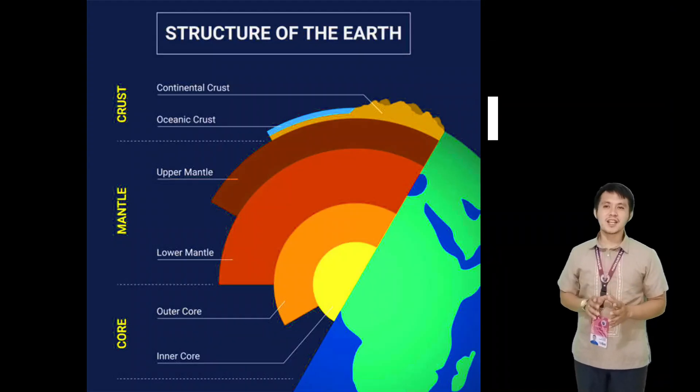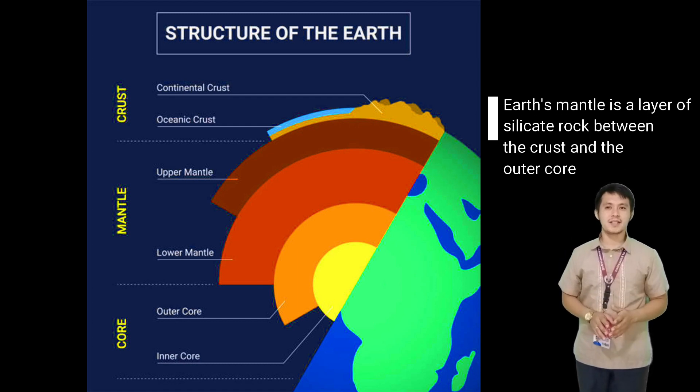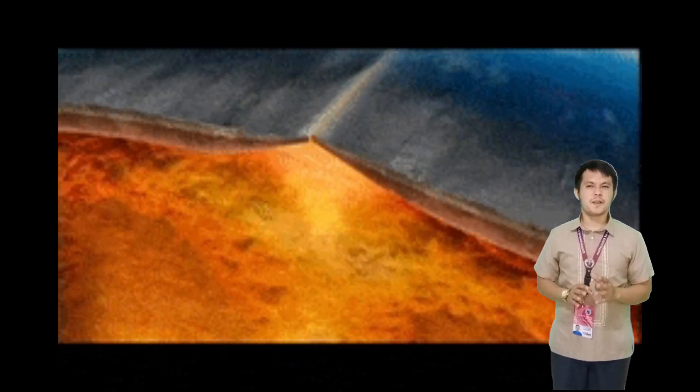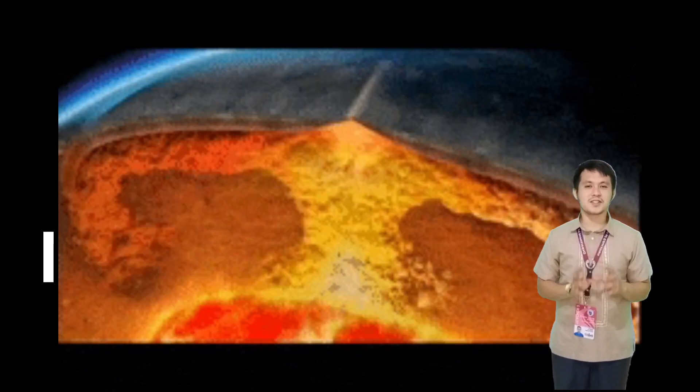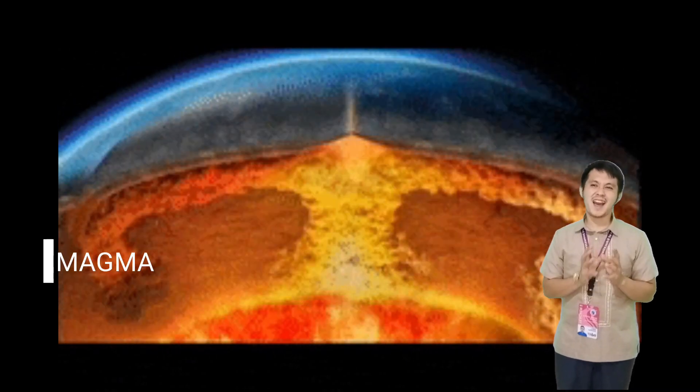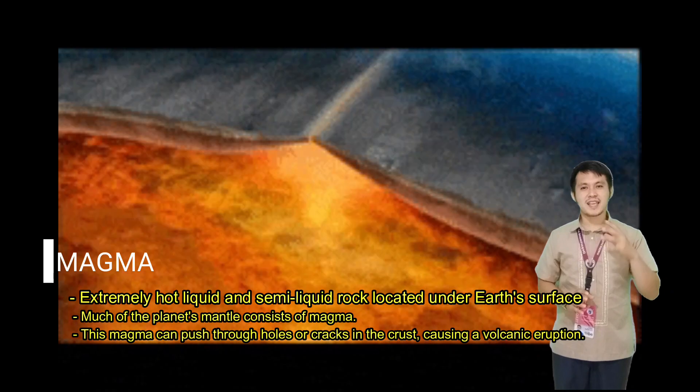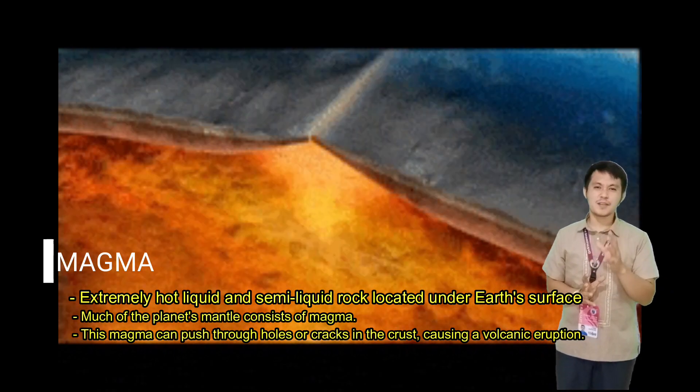The mantle is the layer of the Earth that lies between the crust and core. The mantle is very thick and makes up most of the entire planet. The mantle is composed of very hot dense rock and serves as magma. Because of the high temperature within the mantle, the rock is kept in a semi-liquified state.